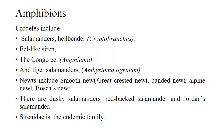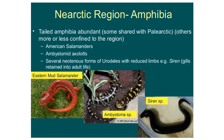Next are the amphibians. Mostly Urodela are present in this region. Urodela is the order of amphibians that includes tailed amphibians such as salamanders, hellbenders, eel-like sirens, the Congo eel, and tiger salamander. Newts include smooth newts, great-crested newts, banded newts, alpine newts, and Bosca's newts. Dusky salamanders, red-backed salamanders, and Jordan's salamanders are also included. Sirenidae is the endemic family. Pictures show Eastern mud salamanders, Ambystoma species, and siren species — Urodela are most common in the Nearctic region.